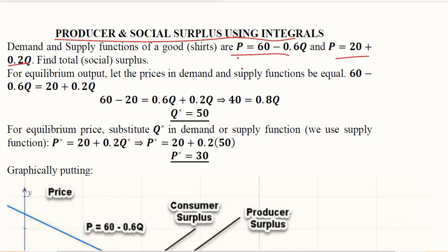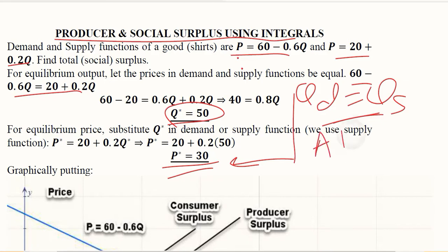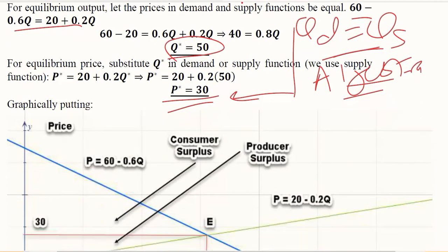Let us consider the equilibrium output. For that, we have equated the two equations — Qd and Qs — because this allows us to find the equilibrium output. In this case, the equilibrium quantity Qs* is 50 and the equilibrium price Ps* is 30. You can do this simple calculation on the basis of algebra and the basics of demand-supply equilibrium in a market.